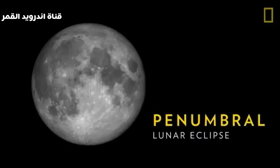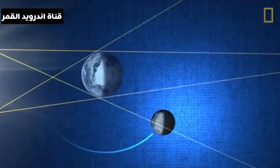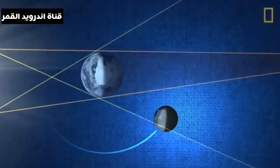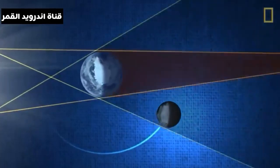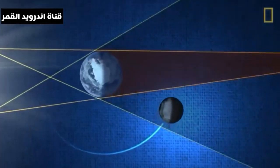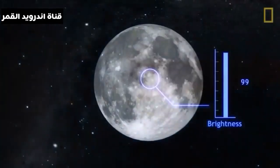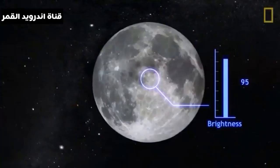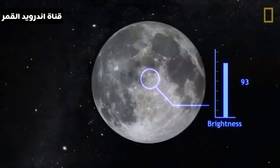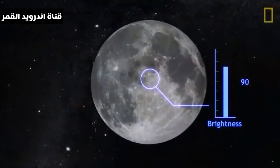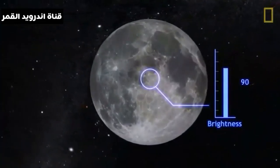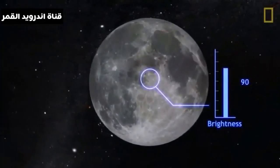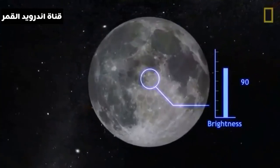Last, a penumbral lunar eclipse occurs when the Moon passes through Earth's penumbral shadow. The event is so subtle that most people don't even notice — the Moon will appear just slightly darker than normal.